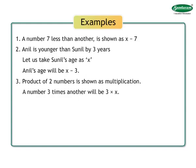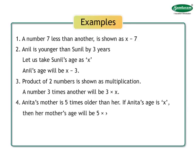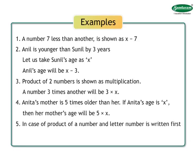Number 3: product of two numbers is shown as multiplication. A number 3 times another will be 3 into x. Number 4: Anita's mother is 5 times older than her. If Anita's age is x, then her mother's age will be 5 into x. Number 5: In case of product of a number and letter, number is written first and multiplication sign is not used. 5 into x is written as 5x.